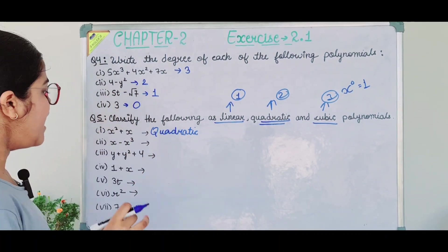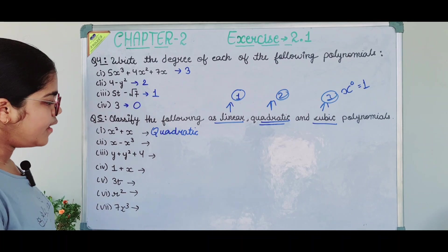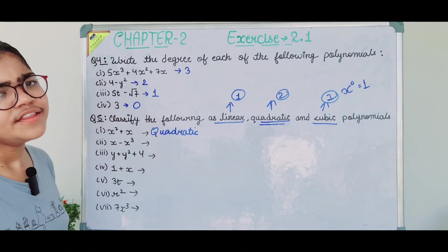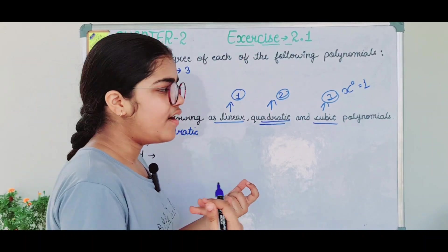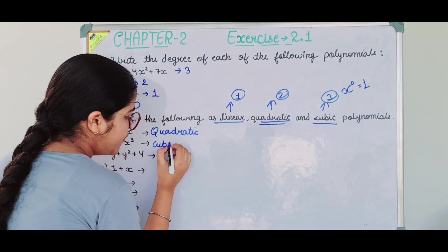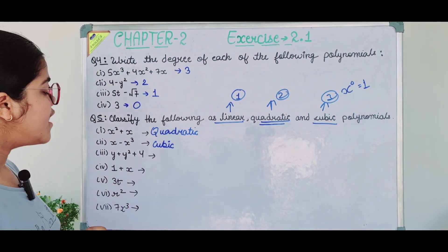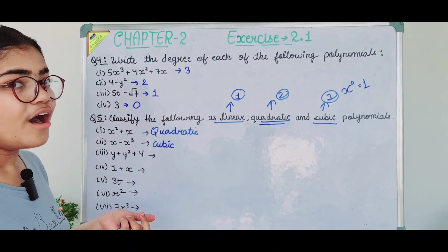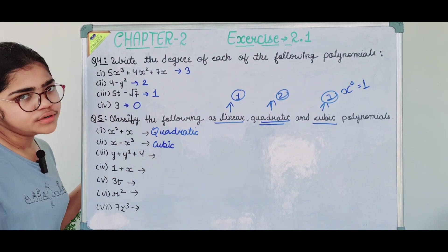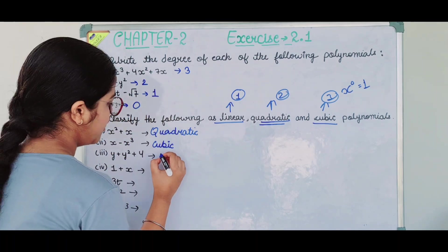Second, x − x³. The highest power is 3, so the degree is 3. This is a cubic polynomial. Third, y + y² + 4. The powers are 1 and 2; highest is 2. So this is a quadratic polynomial.